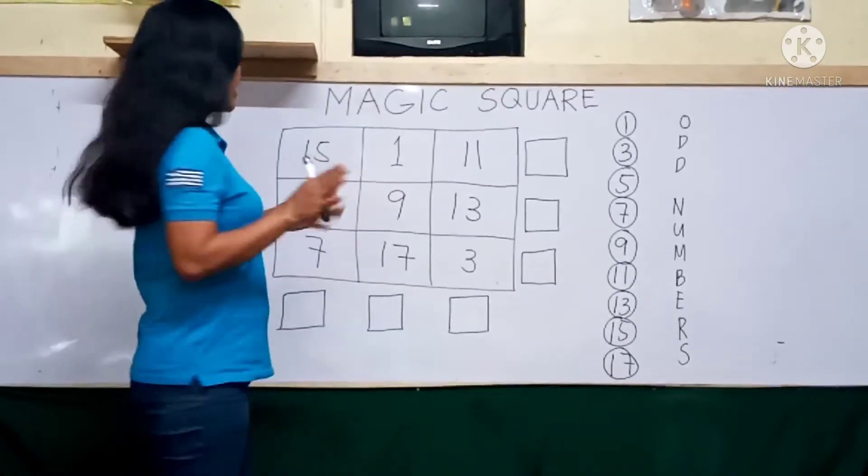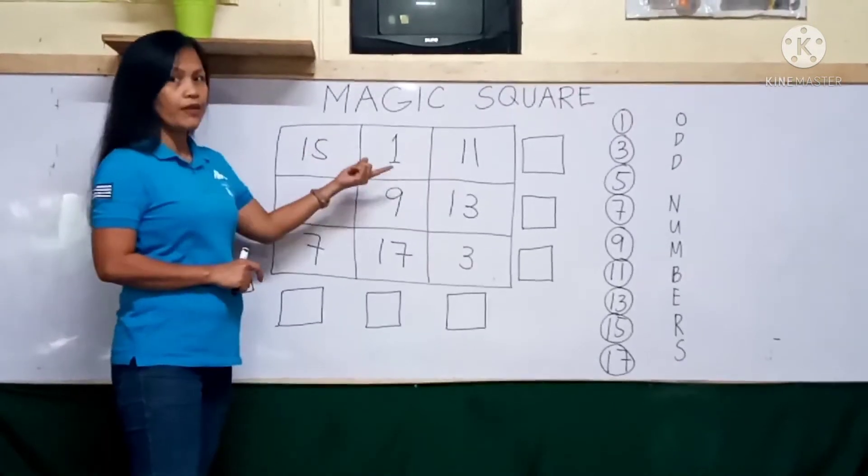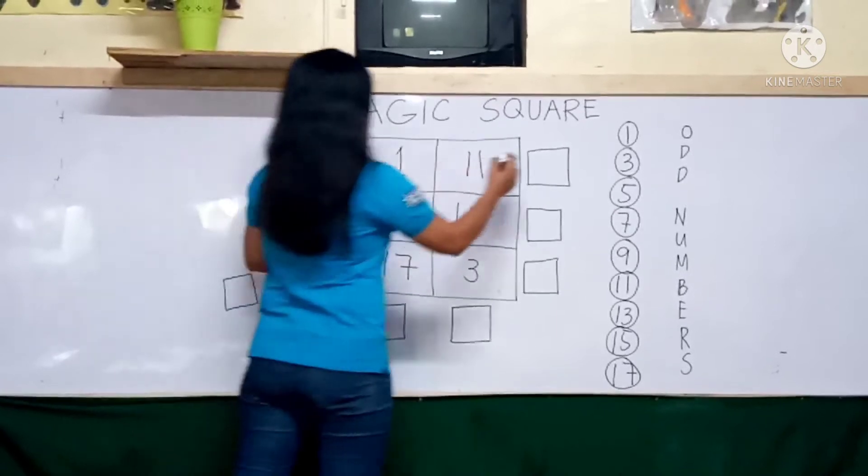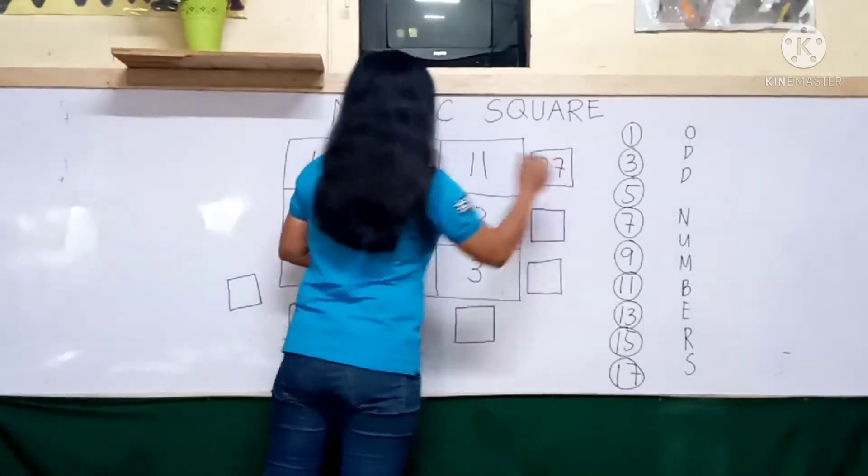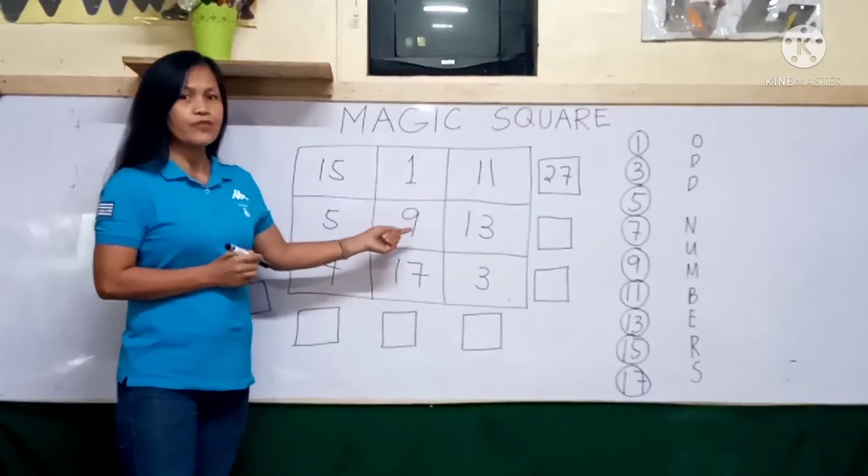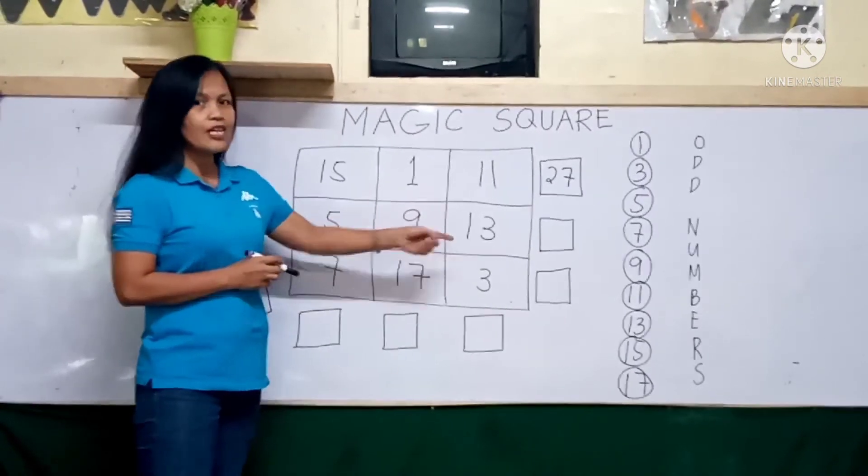Now, let's check. Let us add 15 plus 1, 16, plus 11, 27. Next, 5 plus 9, 14, plus 13, 27.